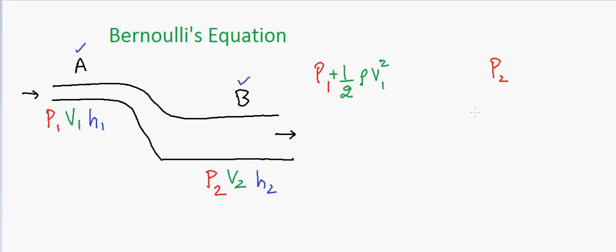I'll say a plus sign here, so half rho V squared. Let me move this to somewhere here. So half rho V squared, and the same thing we'll have here is plus half rho V squared.